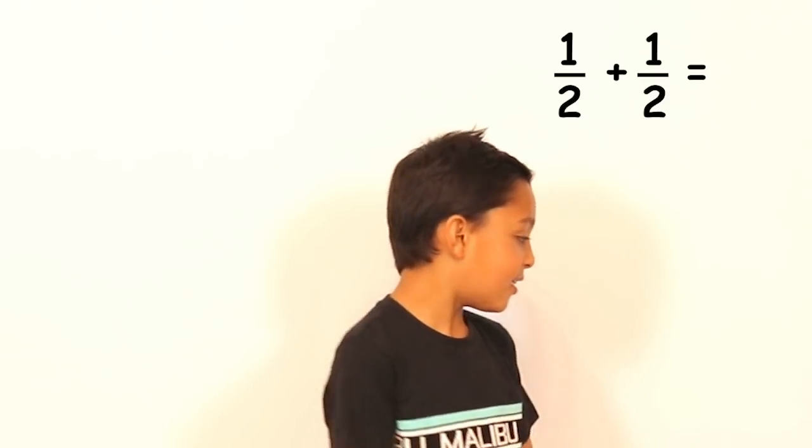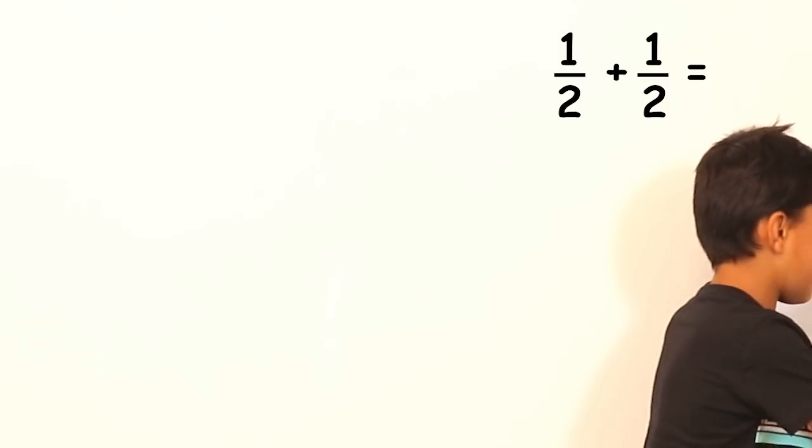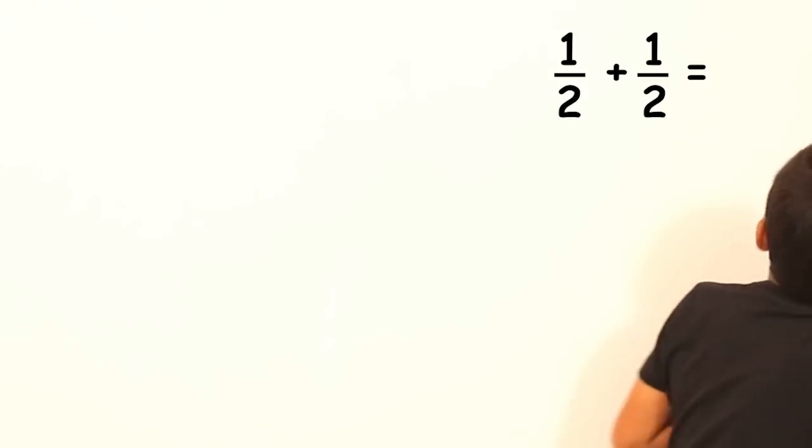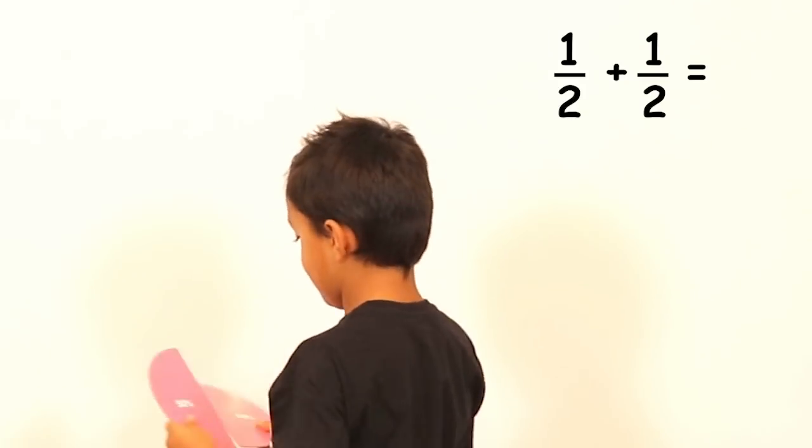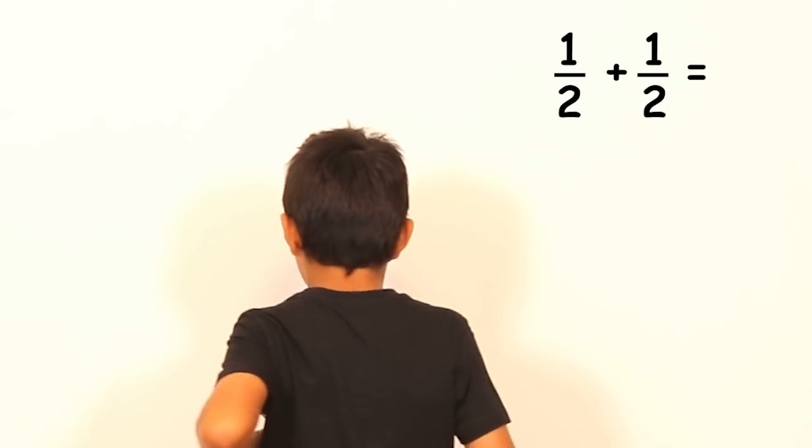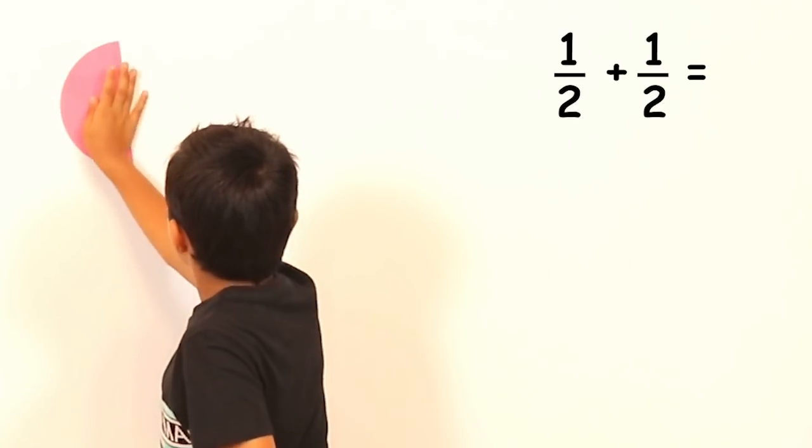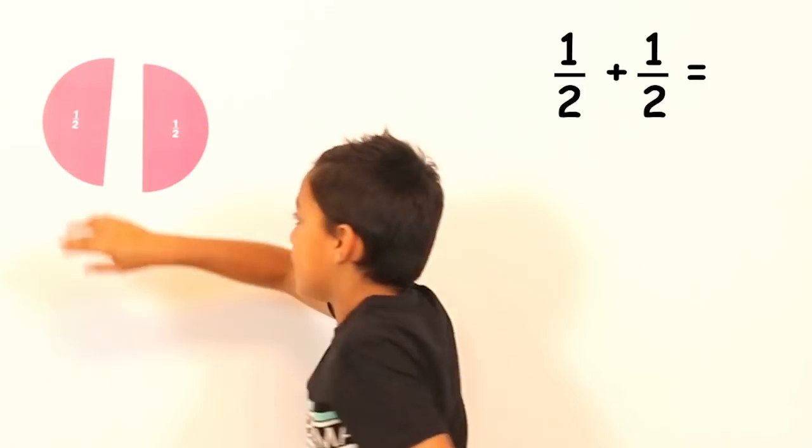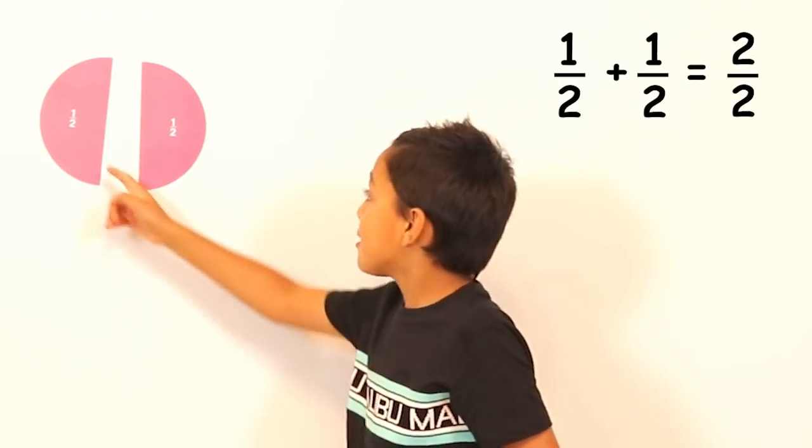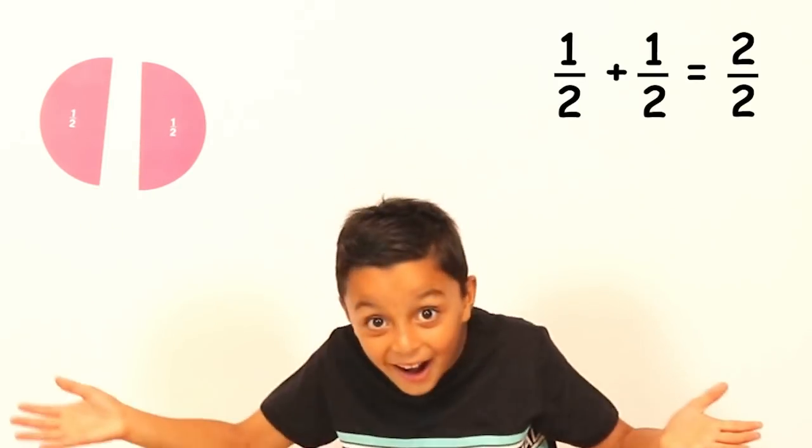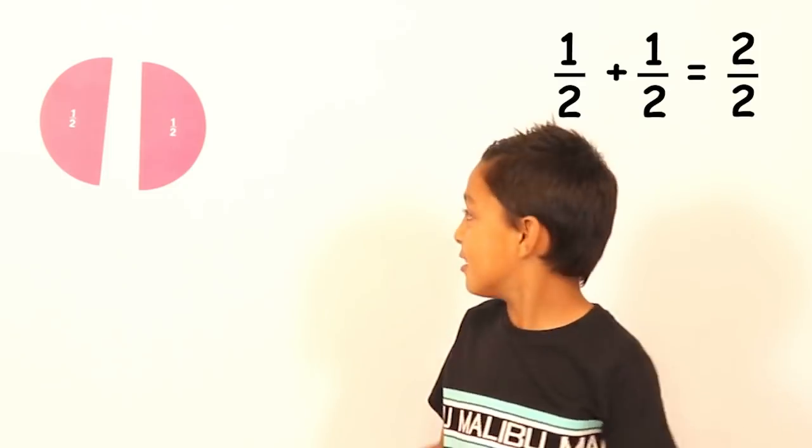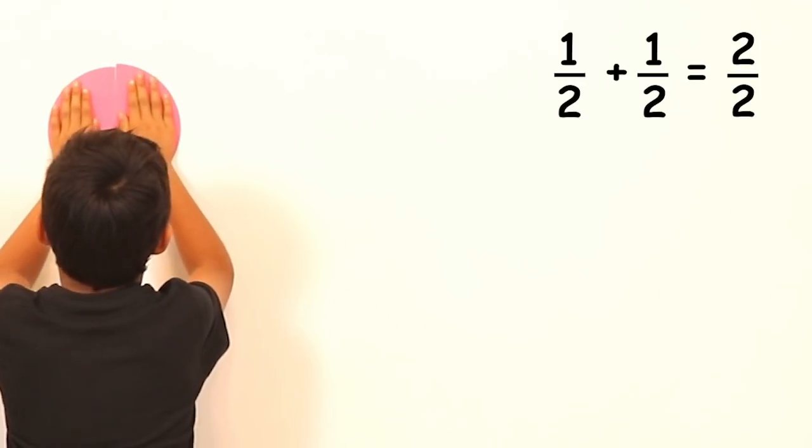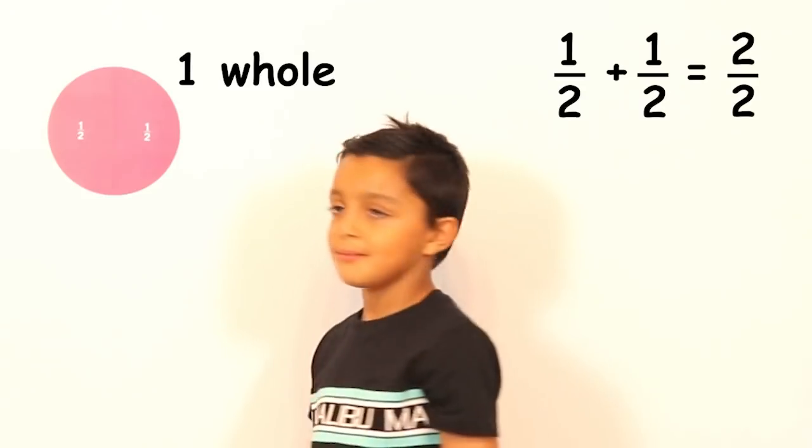Hi Niall, should we start off with doing one half plus one half? Okay, I'll get my half. So here's one half and then here's the other half and we have one, two halves. Two halves. So it's two halves. And when you put them together what happens? When you put them together it makes a whole. It makes one whole.